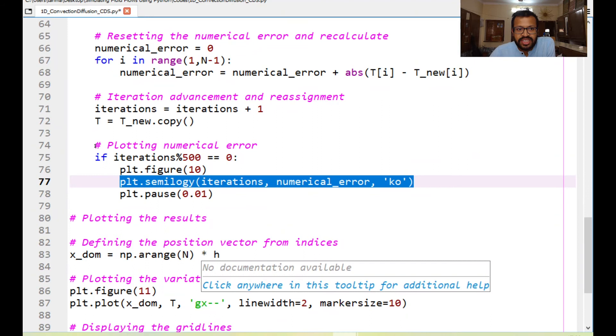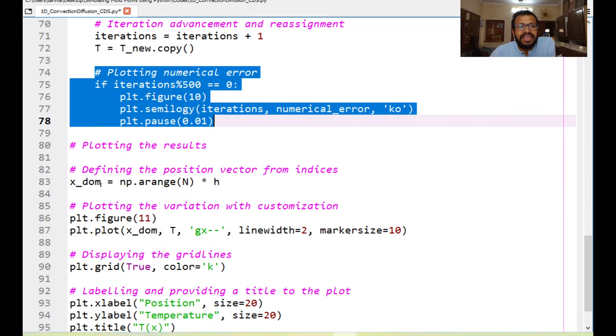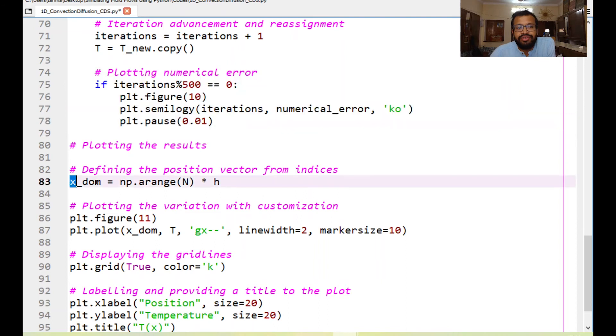So once that is done once the numerical error is being plotted then we do the usual plotting of the results. Here we define the x DOM that takes the position vector of all the node points and that is being stored in the x DOM. You can think of this as the x coordinate of all the grid points.